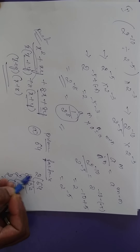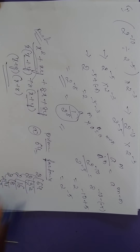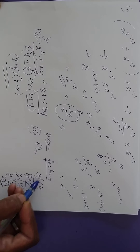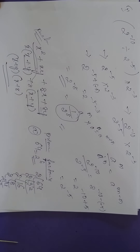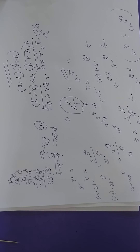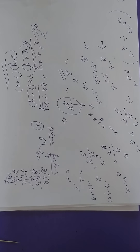So 64 equals 2 times 2 times 2 times 2 times 2 times 2 — that is 2 to the power of 6. This is all about prime factorization.